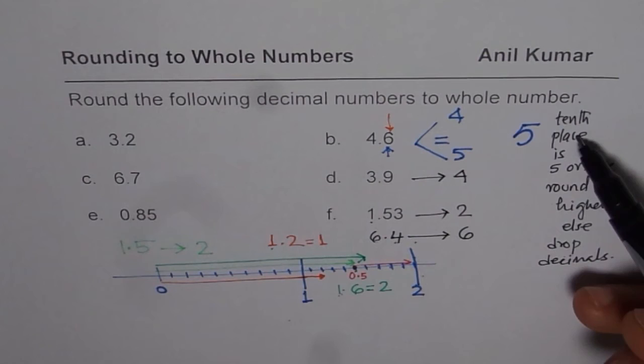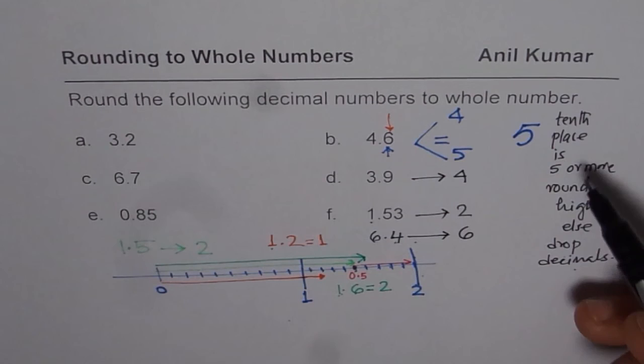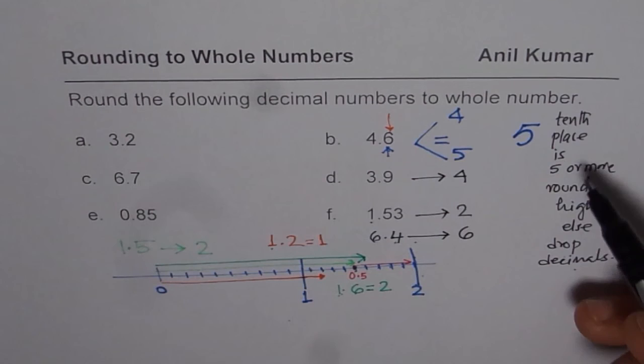So the rule is, check 10th place. If 10th place is 5 or more, round higher, else drop decimals. So that is what you need to do when rounding to whole numbers. I hope the concept is clear. Thank you and all the best.